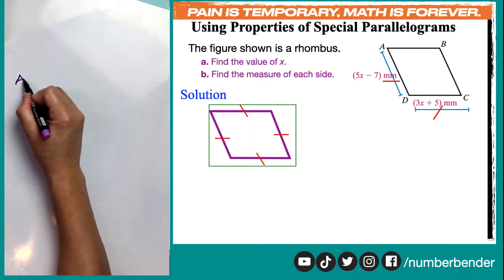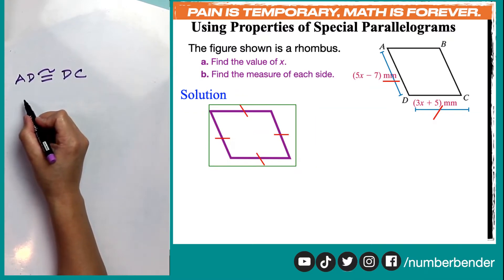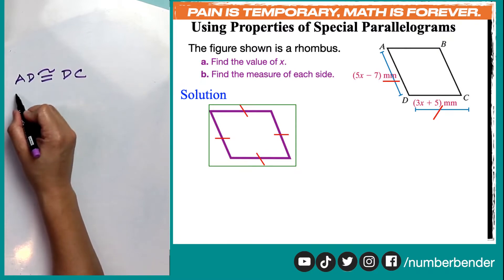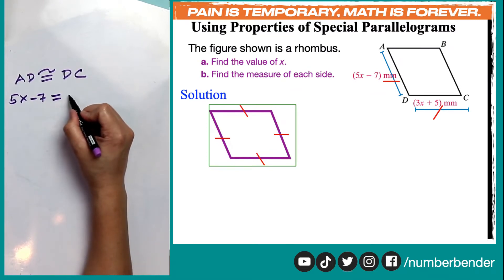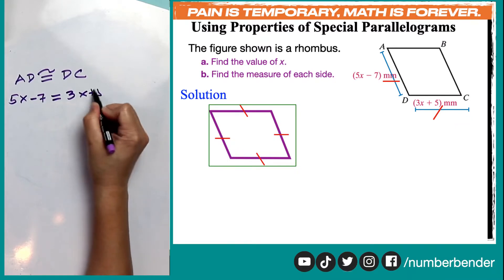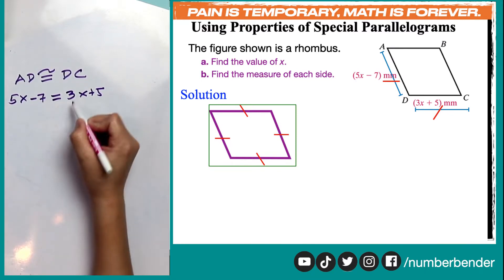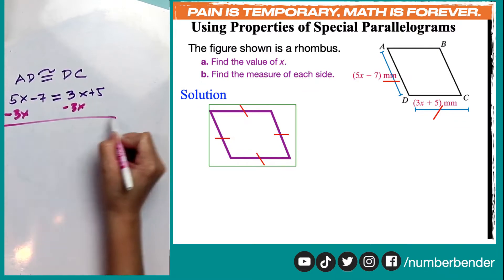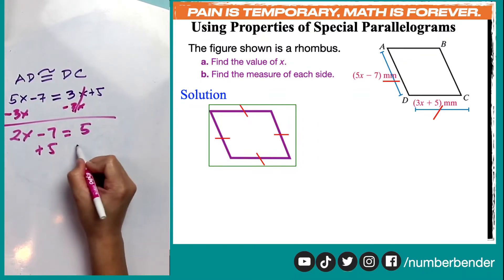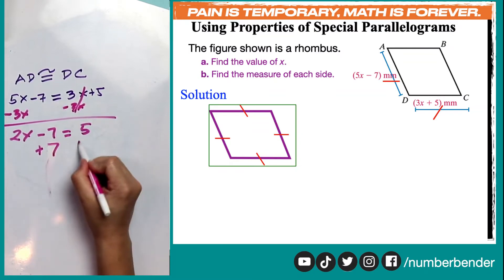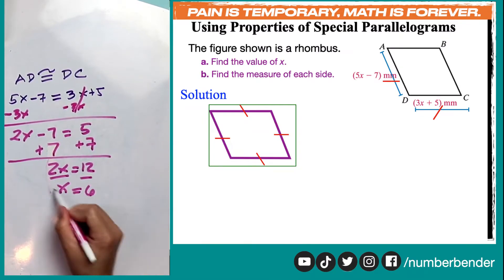We know that line segment AD is congruent to line segment BC. We know in our given problem that line segment AD is not an actual measurement but an expression, 5x minus 7. And since it's congruent to BC, we can equate BC, which is represented by 3x plus 5. Now that we have our algebraic equation, we can solve it by subtracting 3x on both sides so that we have 2x minus 7 equals 5. And by adding 7 on both sides, we have 2x equal to 12, and now we have x equal to 6.